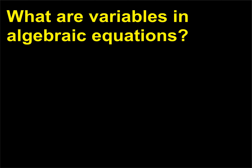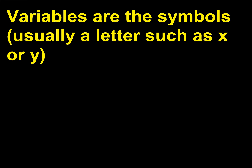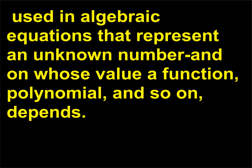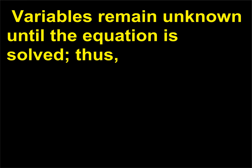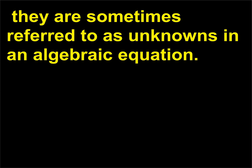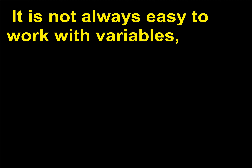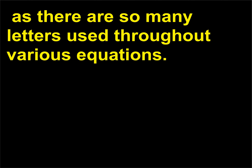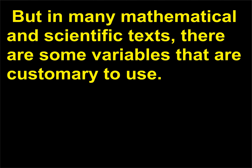What are variables in algebraic equations? Variables are the symbols — usually a letter such as X or Y — used in algebraic equations that represent an unknown number and on whose value a function, polynomial, and so on depends. Variables remain unknown until the equation is solved; thus, they are sometimes referred to as unknowns in an algebraic equation. It is not always easy to work with variables, as there are so many letters used throughout various equations.